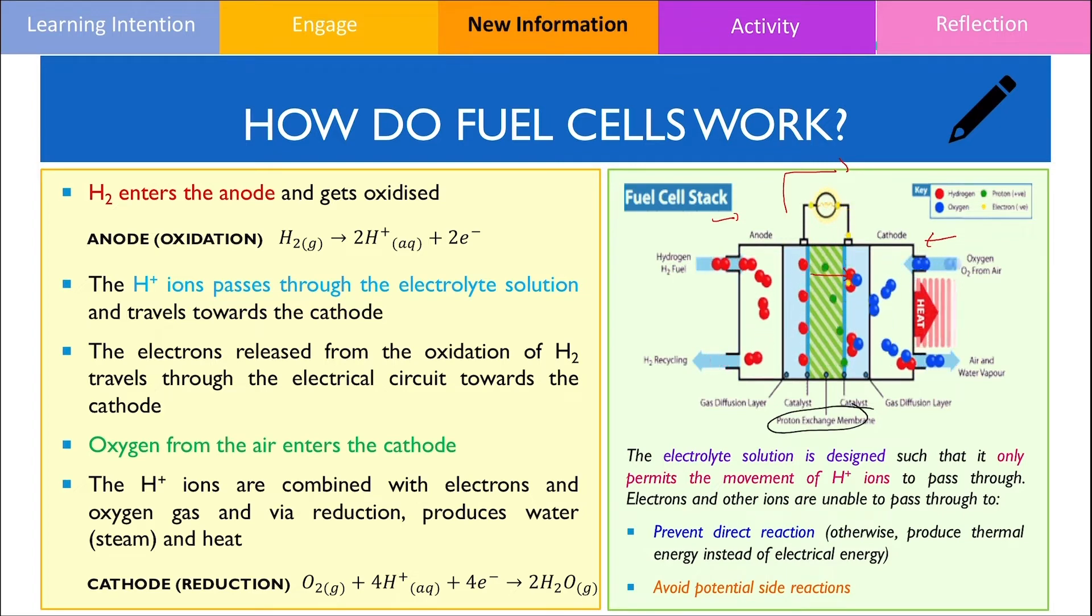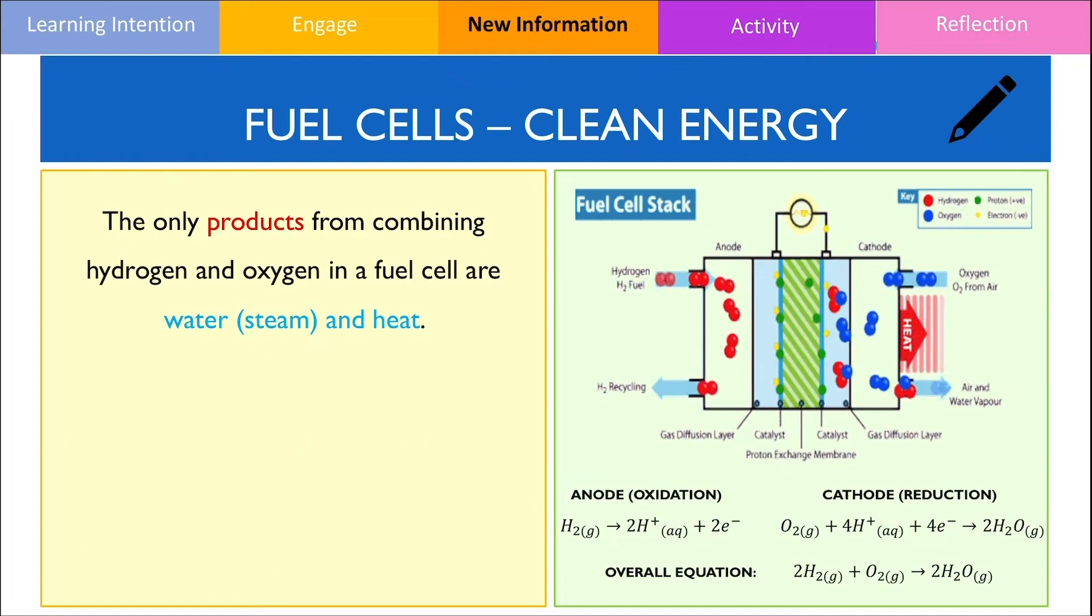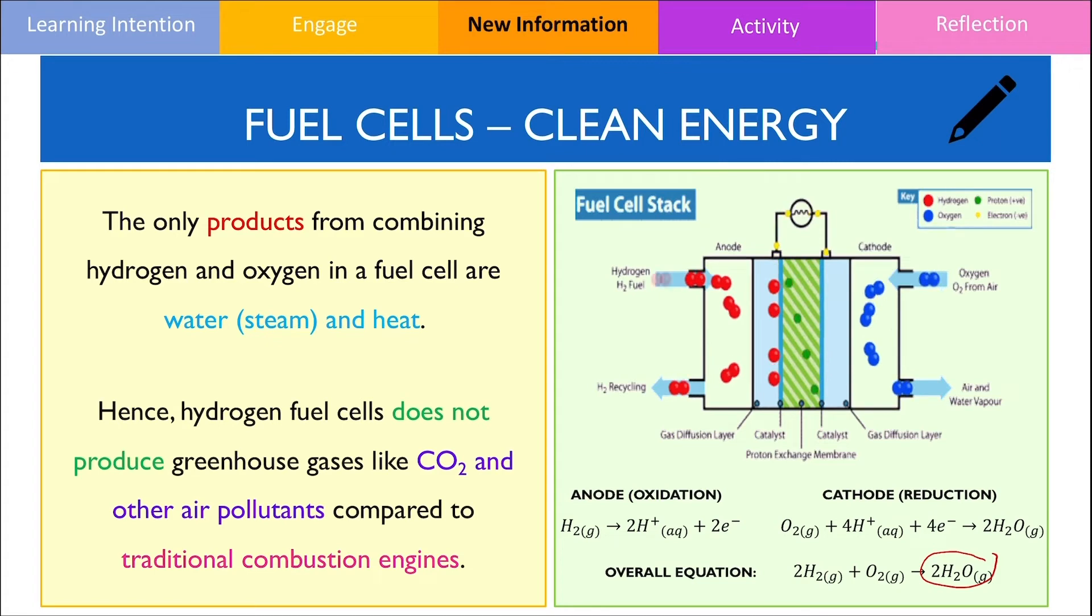Other than the proton exchange membrane, other common electrolytes include phosphoric acid and potassium hydroxide. As you can see from the overall equation, the only products formed from this redox reaction is water vapour and heat. As a result, hydrogen fuel cells does not produce greenhouse gases like carbon dioxide or other air pollutants compared to traditional combustion engines.